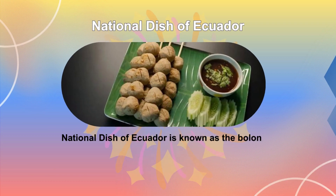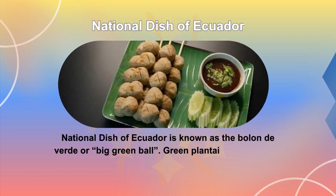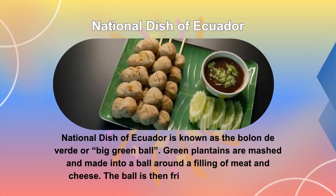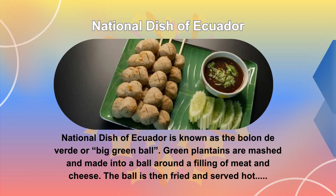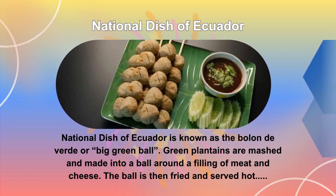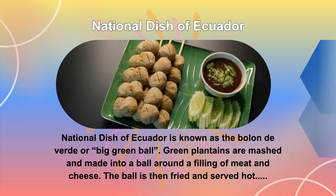The national dish of Ecuador is known as bolón de verde, or big green ball. Green plantains are mashed and made into a ball around a filling of meat and cheese. The ball is then fried and served hot.